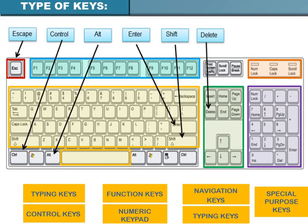Now let's talk about the different types of keys on a computer keyboard. The first type is typing keys, also called alphanumeric keys. These include letters from A to Z, digits from 0 to 9, as well as punctuations and symbols — giving the same layout as a traditional typewriter. They are called alphanumeric because they include both alphabets and numbers.